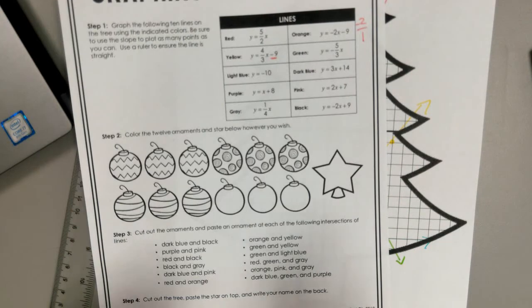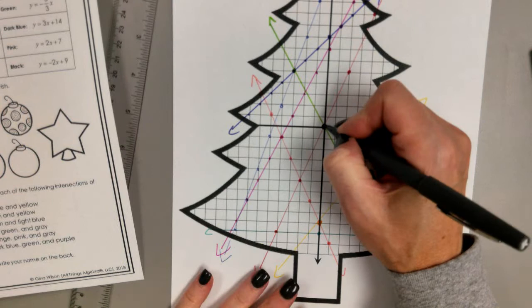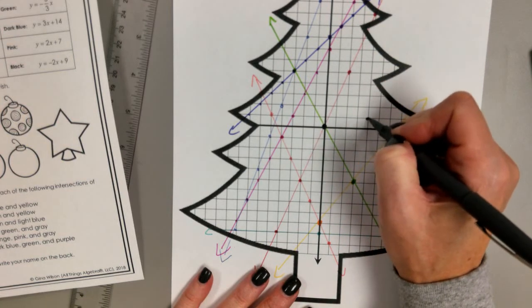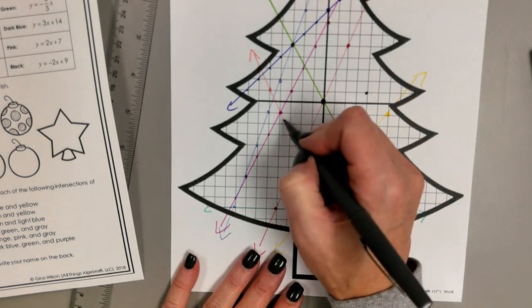All right. Then we had a gray line. It was y equals one fourth x. So again, no plus or minus, so we start at the origin. And we're going up 1 over 4. I don't really have a place to mark it, so I'm going to back up.